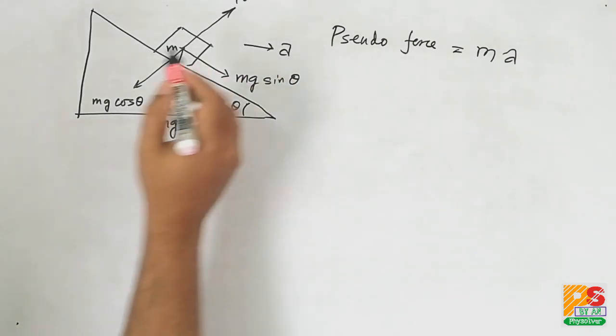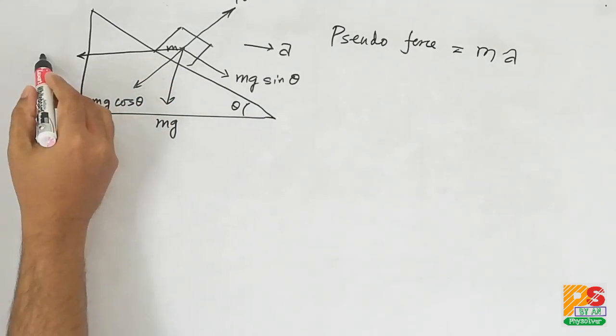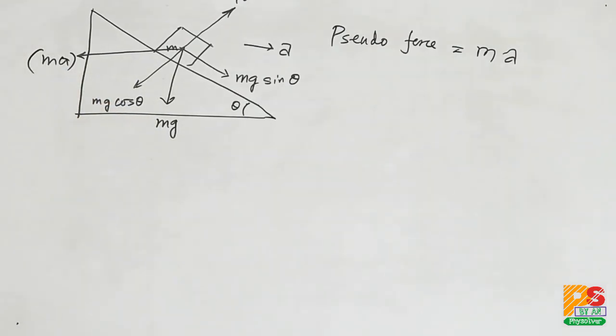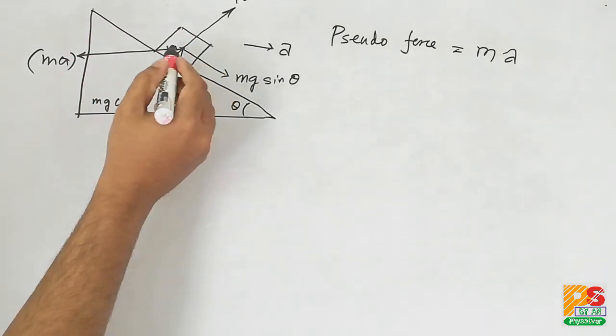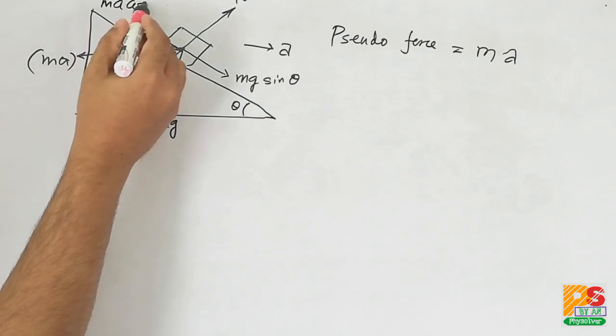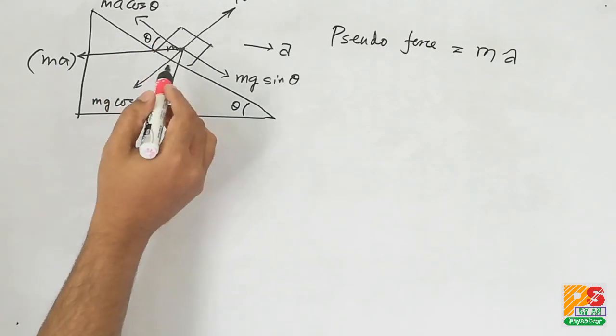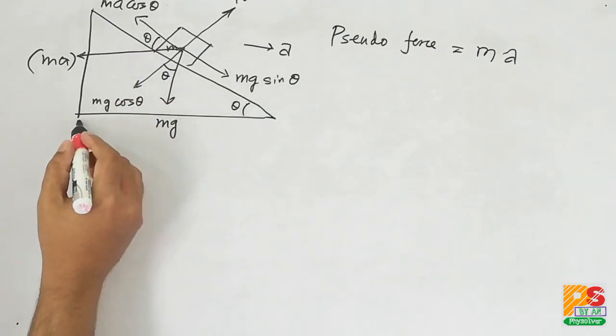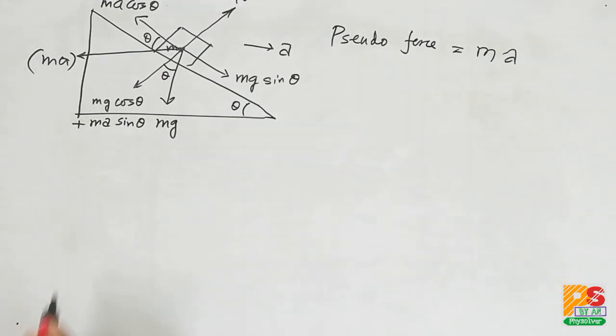Now coming to the direction of pseudo force, it is always opposite to the acceleration of the body. Now this MA can be resolved into two components: one is up the incline which is MA cos theta, since this is theta, the corresponding angle, and another is along mg cos theta which is MA sin theta.